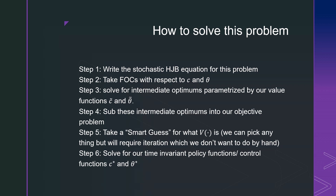The way we're going to solve this is as follows. We're going to write down our Hamilton-Jacobi-Bellman equation for this problem. We're going to take our first order conditions with respect to C and theta — that being consumption and our allocation parameter to our risky good. We're going to solve for our intermediate optimums parameterized by our value functions. We're then going to substitute these intermediate optimums into our objective problem. Then we're going to take a smart guess for what our value function V is. If we were doing this on a computer, we could pick anything, but that would require iteration and we don't want to do this by hand. We're then going to solve for our time-invariant policy functions C star and theta star.